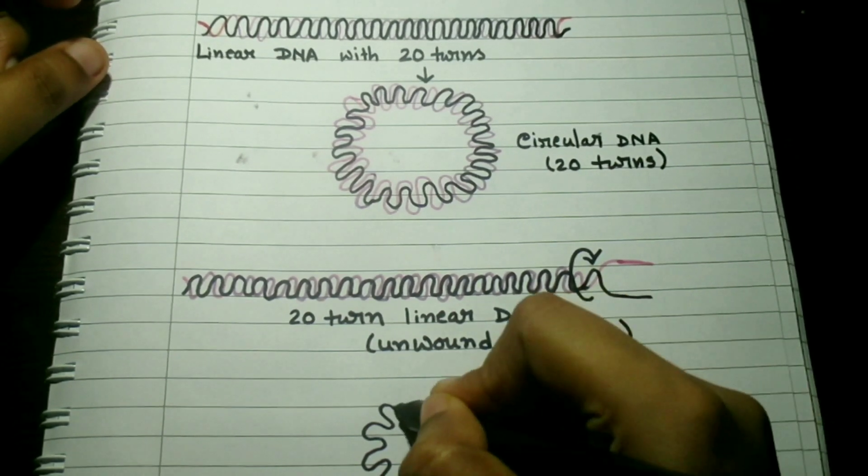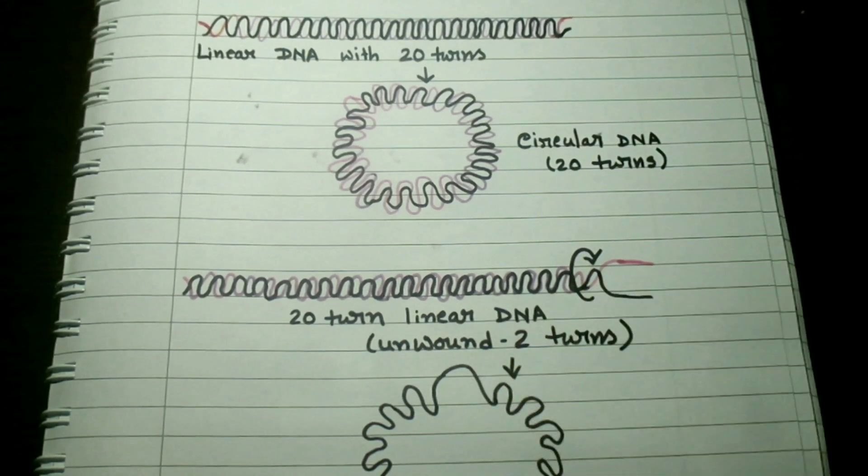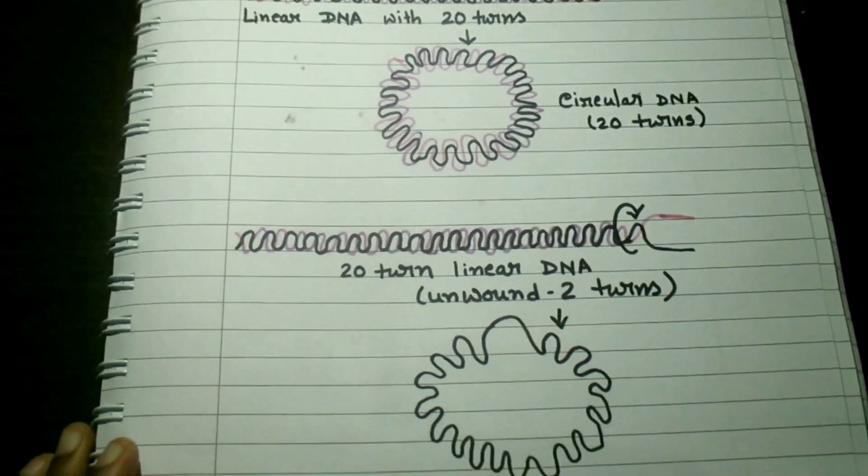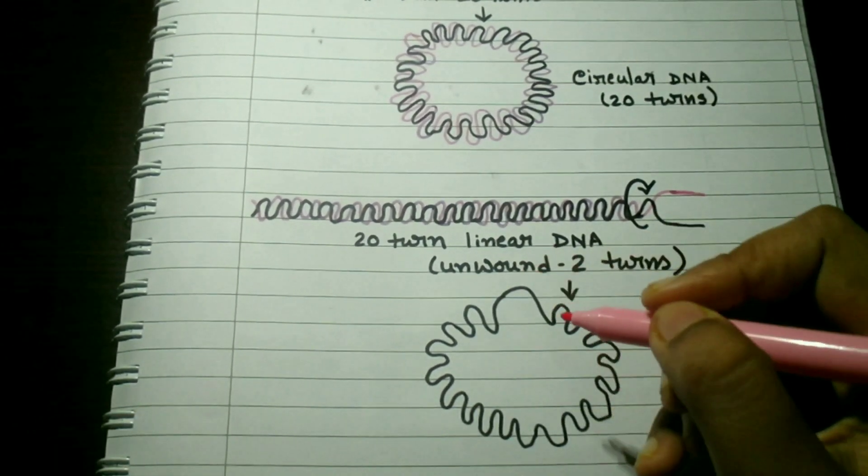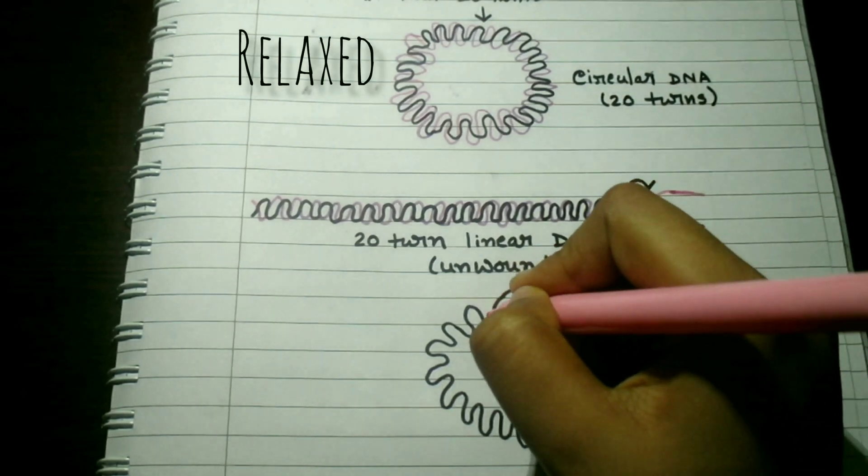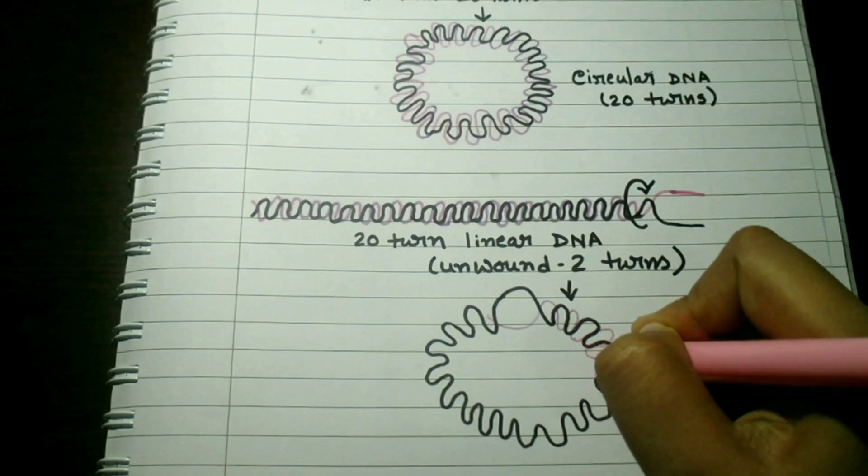Supercoiling affects and is affected by replication and transcription, both of which require a separation of DNA strands, a process complicated by the helical interwinding of the strands. Consider a linear piece of DNA with 20 helical turns.